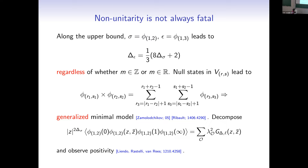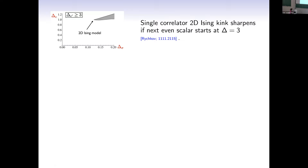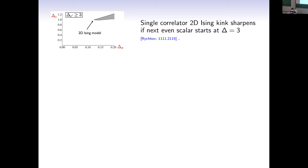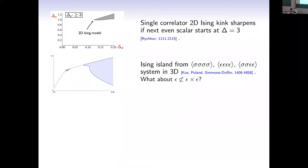Now I want to go through a bit of history of improvements to this plot. This plot appears in the first numerical bootstrap paper by Rastelli, Rychkov, Tonni, and Vichi in 2008. A few years later, a talk by Slava showed the kink can be considerably sharpened from below if we insist the first relevant operator is strongly irrelevant — starting at dimension 3 instead of 2. A few years after that, Kos, Poland, and Simmons-Duffin considered a system of 3 correlation functions in 3 dimensions to get an island around the Ising model. After this, several people, including me, were hopeful that similar techniques could constrain minimal models in 2 dimensions.